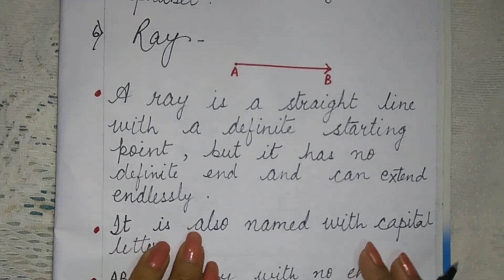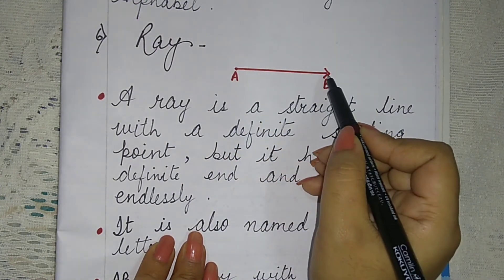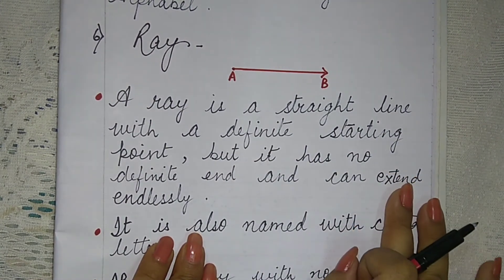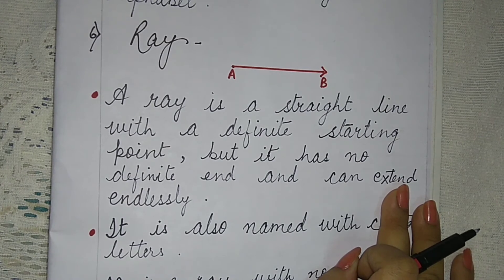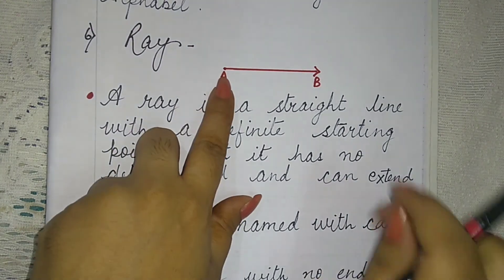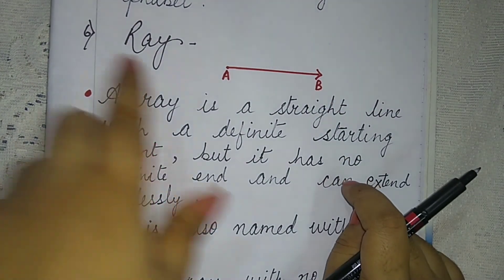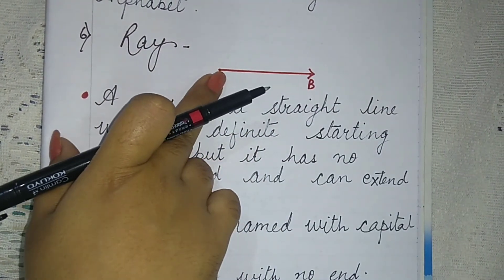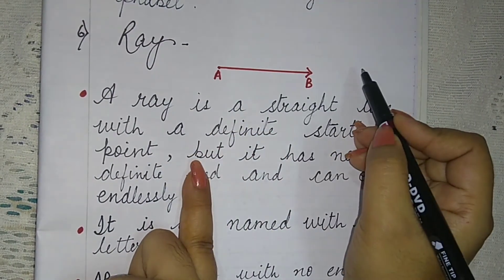A ray has a starting point but no ending point. An arrow on one side means it can go as far as possible — it can extend endlessly and has no limit. If you get a point on both sides, we call it a line segment. The ray has a point on one side and an arrow on the other — it is a starting point but not an ending point. It can extend continuously in one direction.